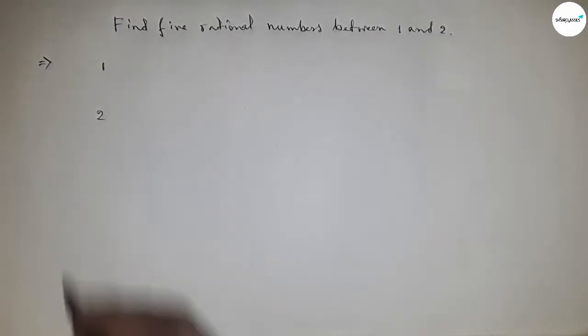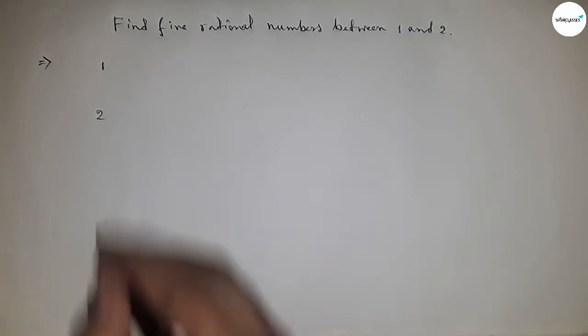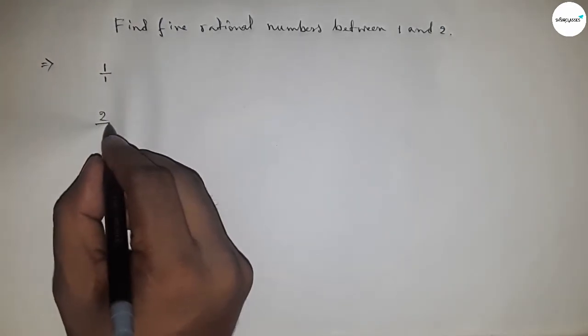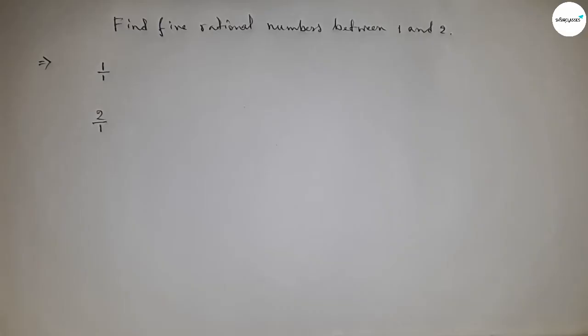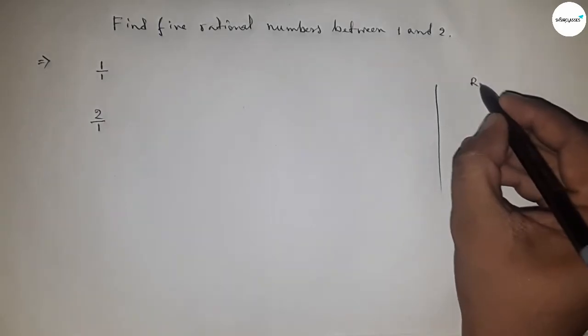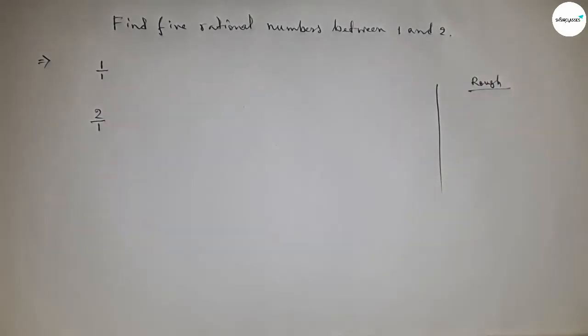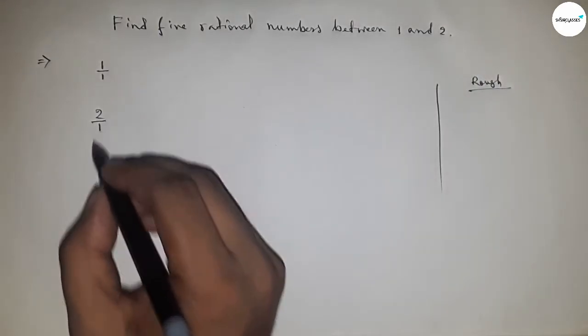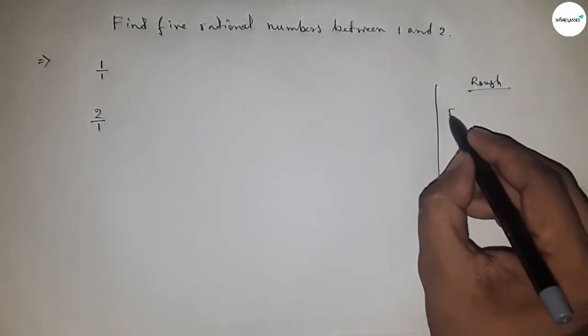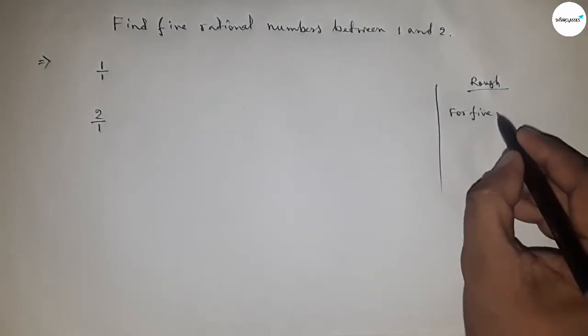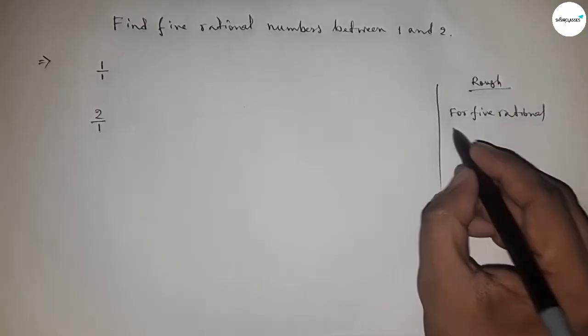numbers 1 and 2. Then we can express 1 as 1 upon 1 and 2 upon 1. Now, roughly discussing some calculation. Here, the denominator of both are equal. So for 5 rational numbers, we have to